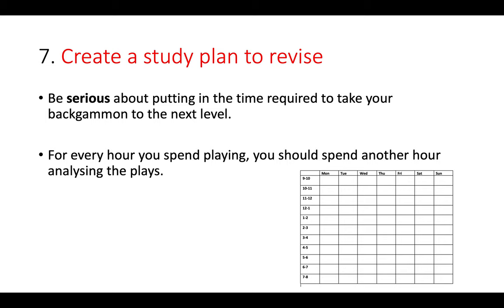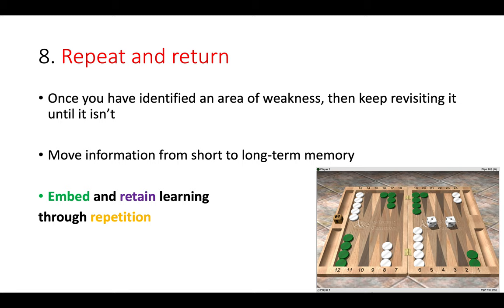Step eight: use your study plan to repeat and return to areas of weakness in order to eliminate them. Keep revisiting those areas and try to move the information and knowledge you've gleaned from short-term to long-term memory. Through repetition, you will embed and retain learning. For example, here green has played the 4-1 slot — how would you play double one? Positions like that opening reply you can go over and over until it has embedded in your memory and you understand it.